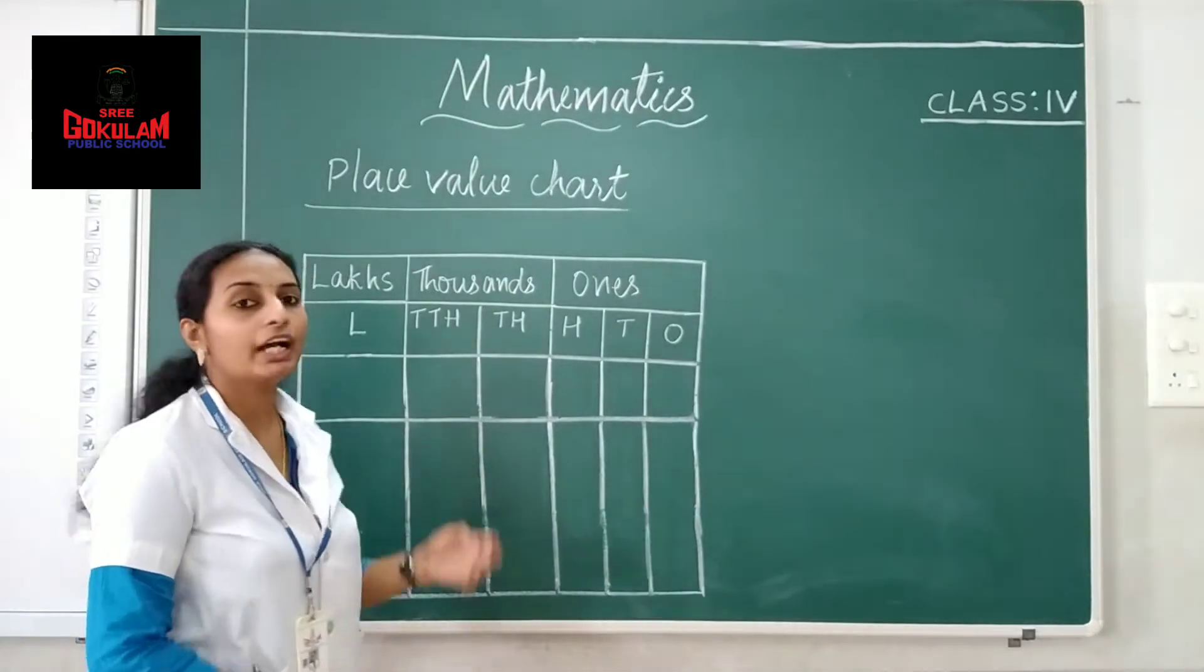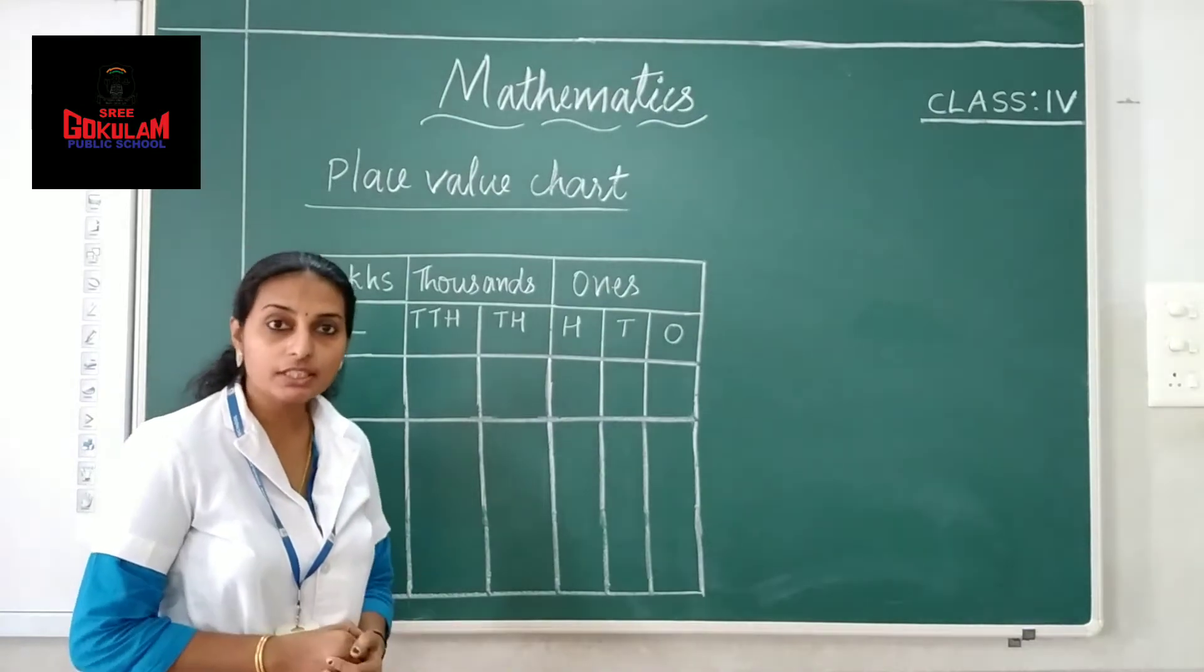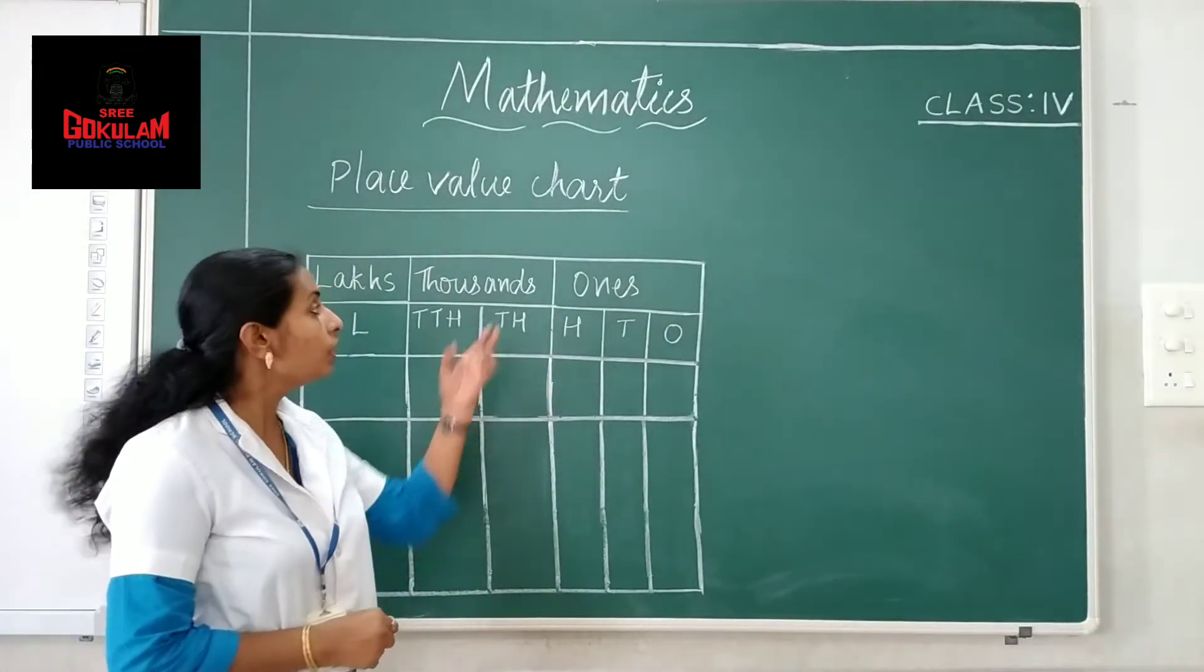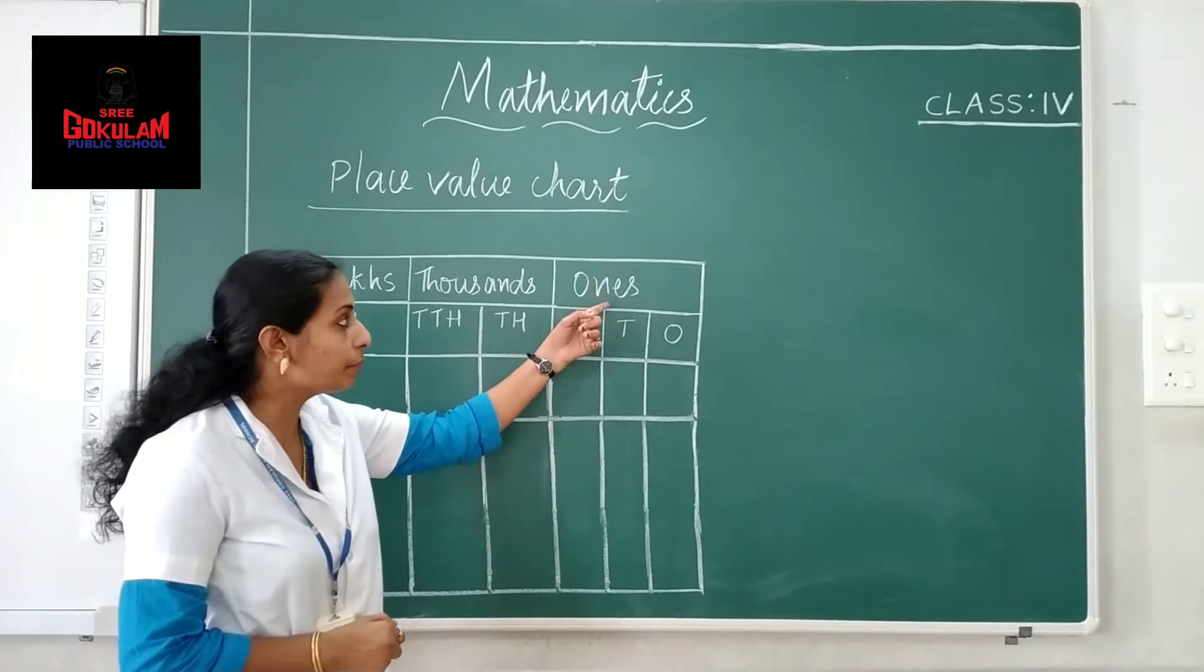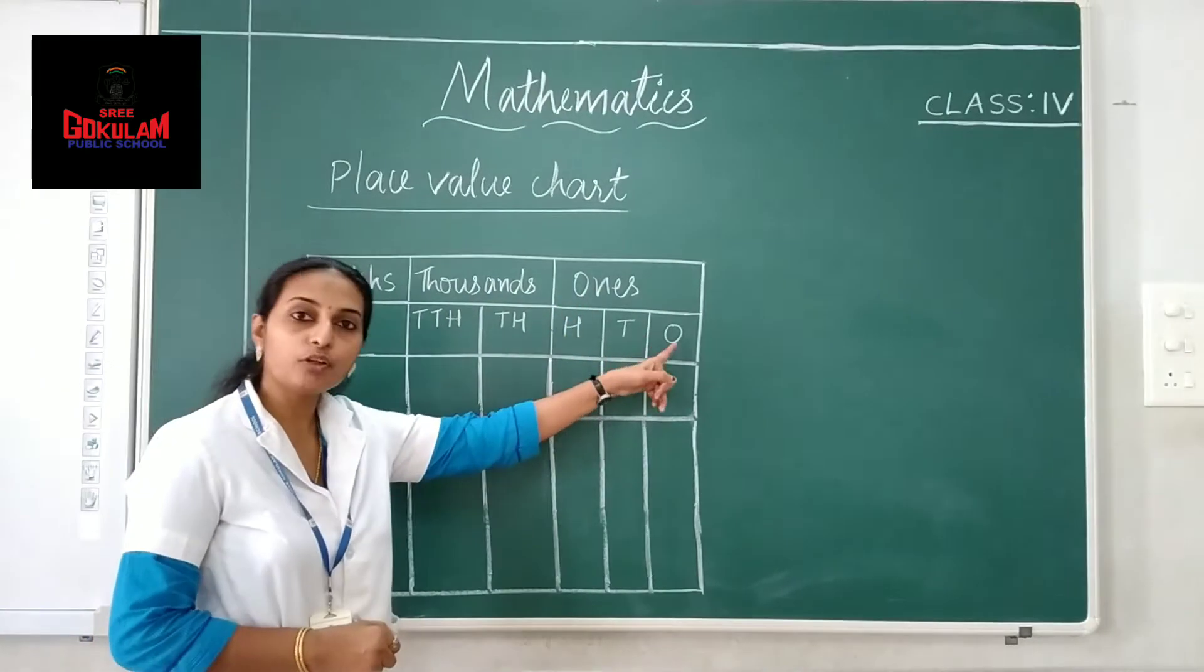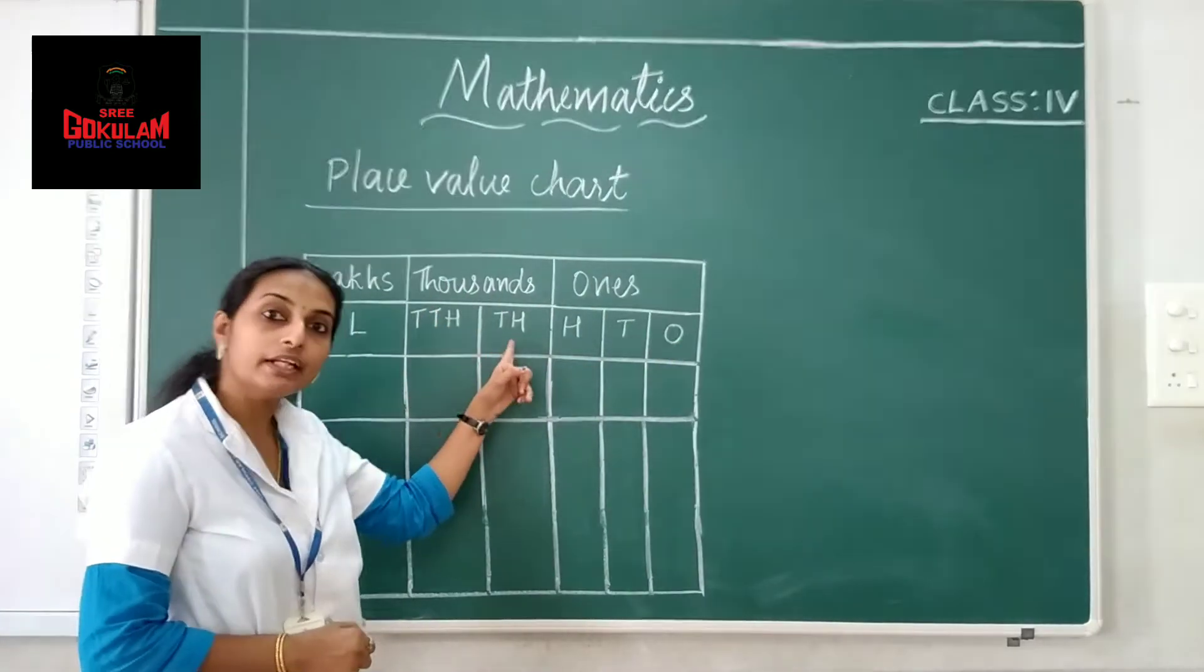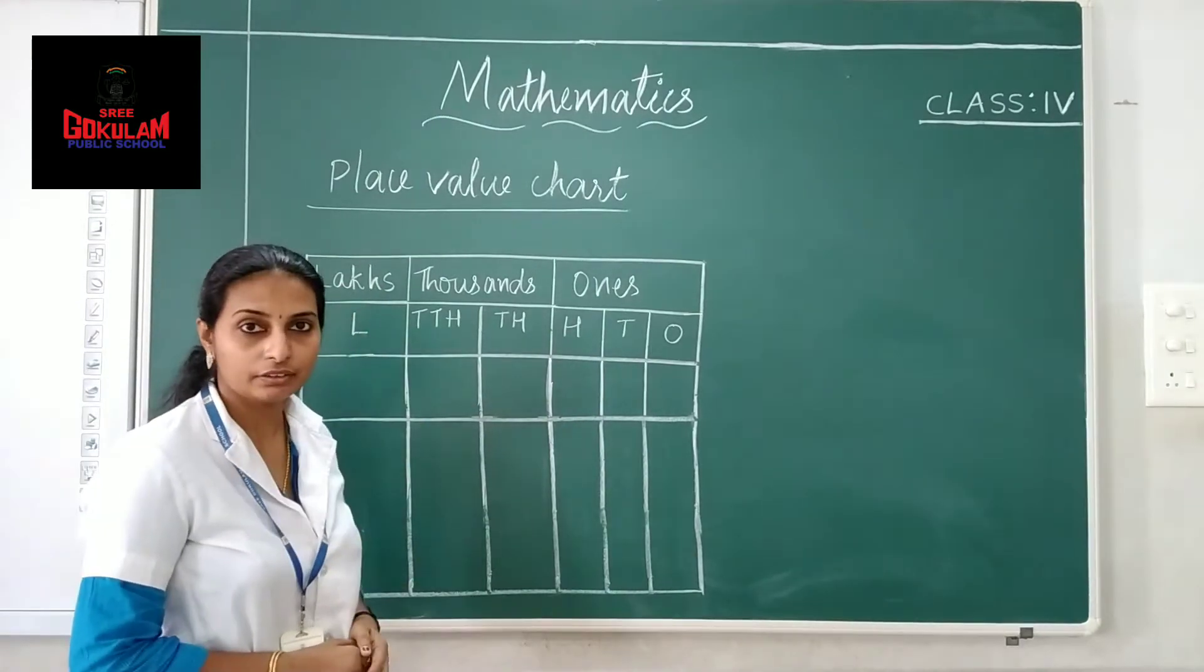See children, here we have place value chart. I told you to make it easy reading, we can divide large numbers into different periods. Here we have 1st period, 1000th period and 1 lakh period. In 1st period: ones, tens, hundreds. In 1000th period: ten thousand and thousand. In 1 lakh period, lakhs. OK?